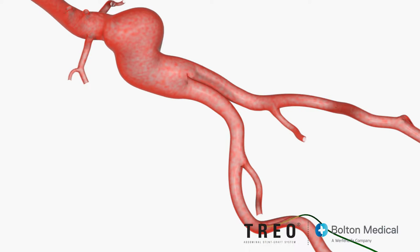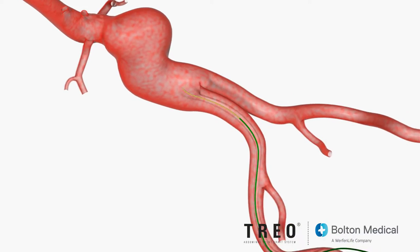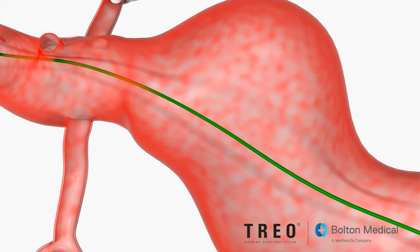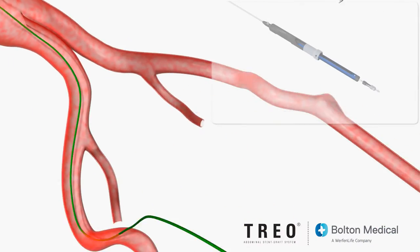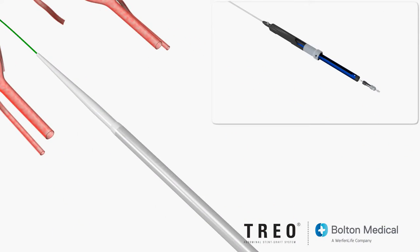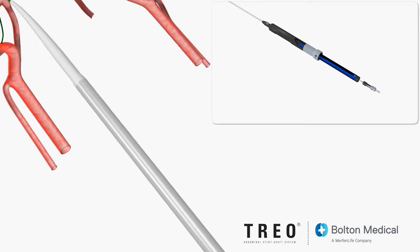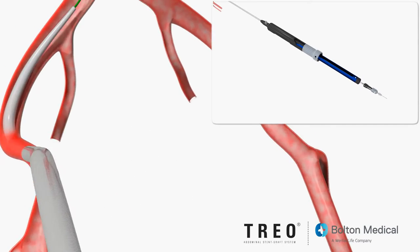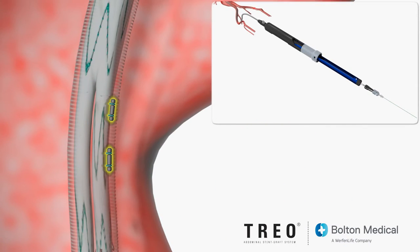After the patient is properly positioned and appropriate access is achieved, introduce a .035 inch guide wire into the artery and advance it to the descending thoracic aorta. Once the guide wire is in position, slowly advance the main bifurcated stent graft delivery system into the artery over the guide wire.